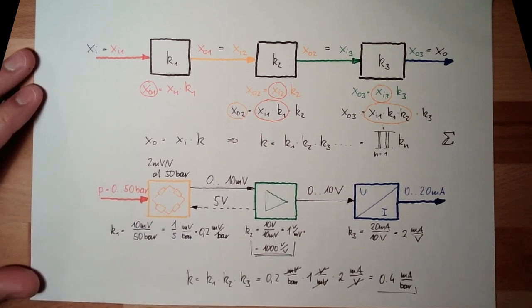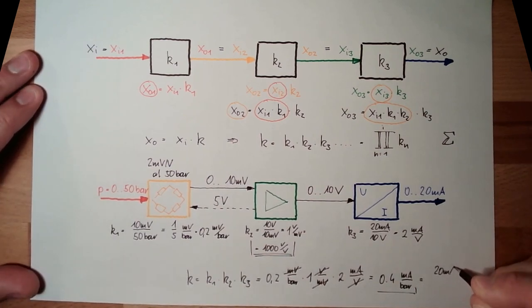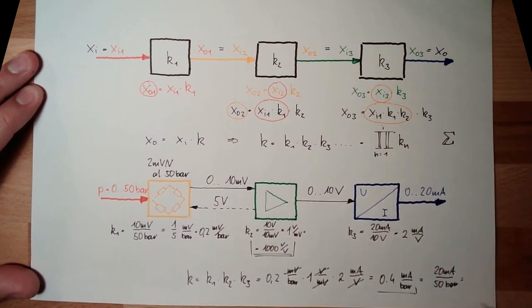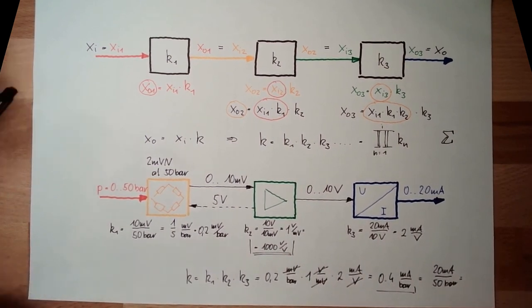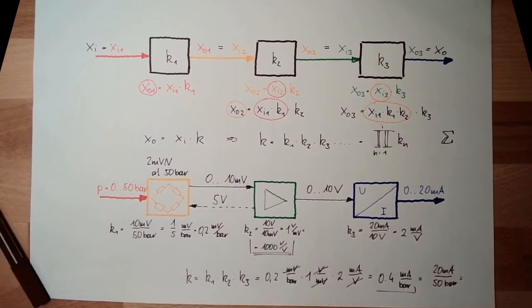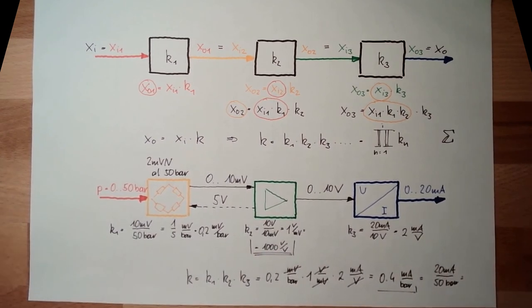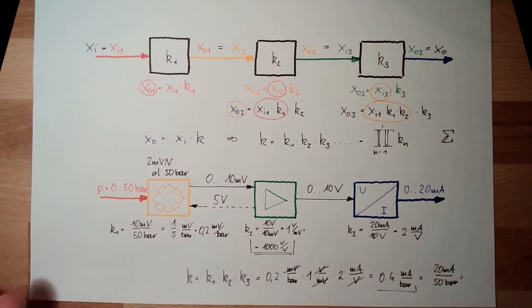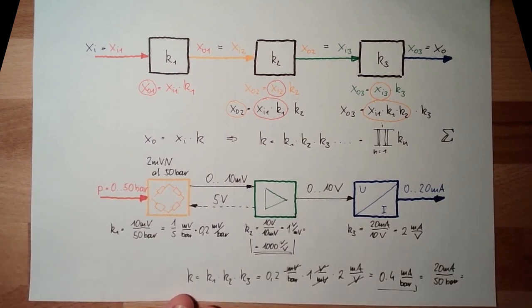This can be directly verified: 20 milliamps divided by 50 bar also gives 0.4 milliamps per bar — pretty much the same. So you have a test to check if you have done it right: if this fits together, the gain factor should be correct.